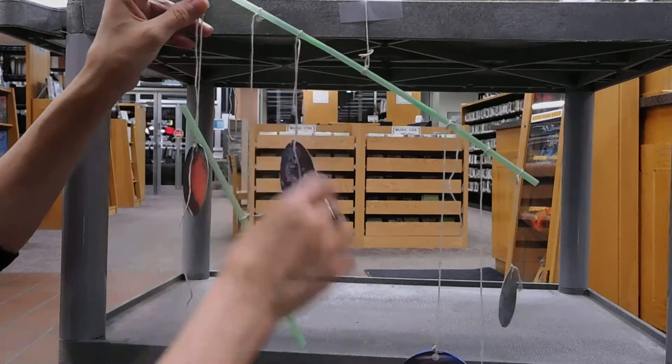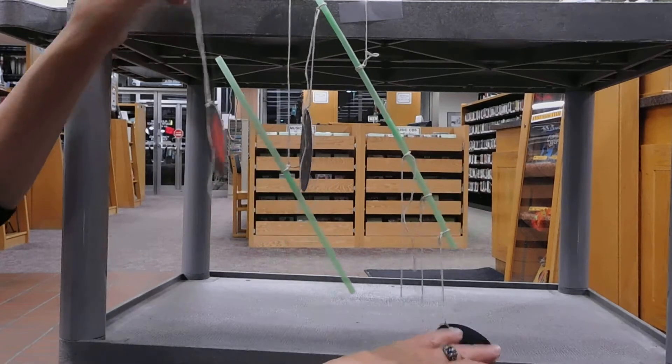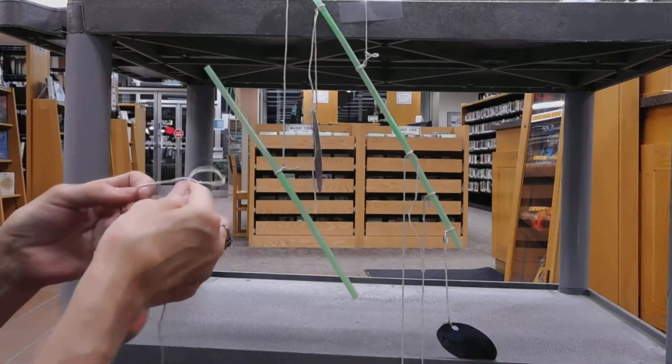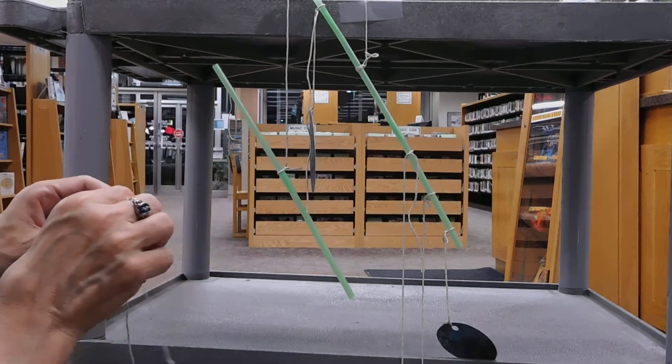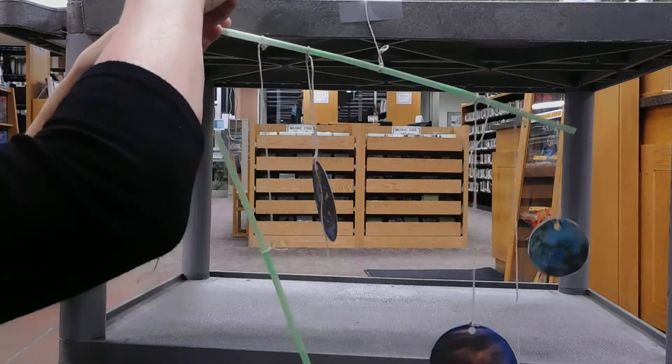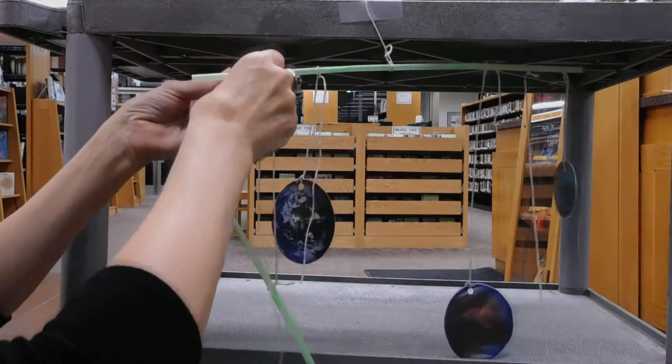When one of you gets on, that one side goes down all the way. And then as you balance the weight off, it brings it more into balance.